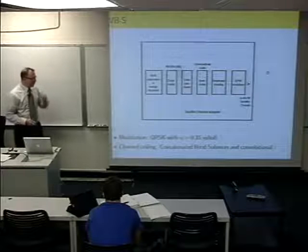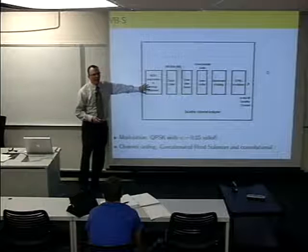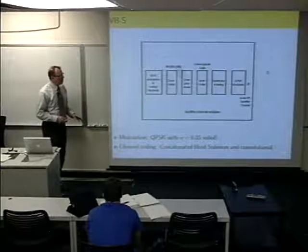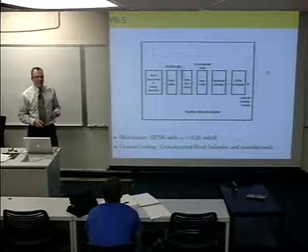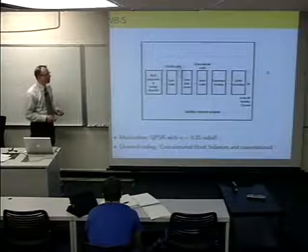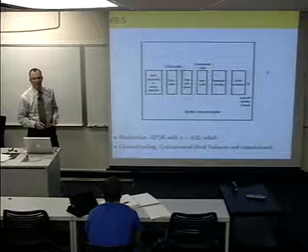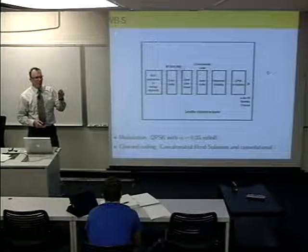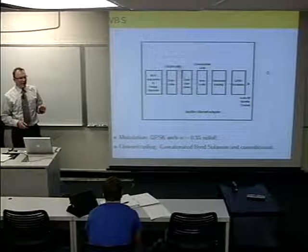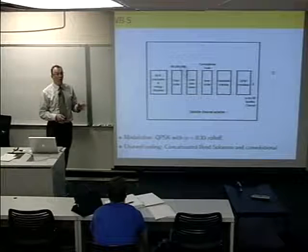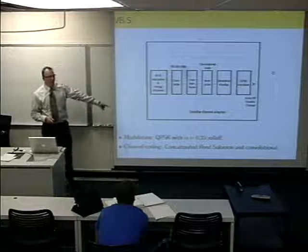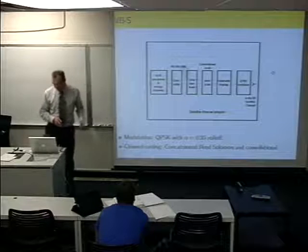DVB-S is the original technology, coming out in 1994 at the same time DirecTV and Dish Network launched their first satellites. For coding, it uses a concatenation of an outer Reed-Solomon code and an inner convolutional code — a popular approach for satellite communications for many years. Reed-Solomon codes are the same types used in CD or DVD players, encoding on a byte basis: 188 data bytes get encoded into a 204-byte code word. Modulation was just QPSK with raised cosine rolloff filtering at 0.35 rolloff.